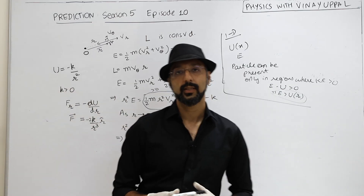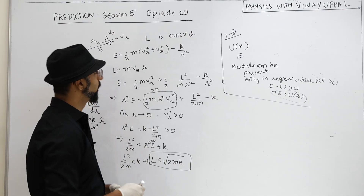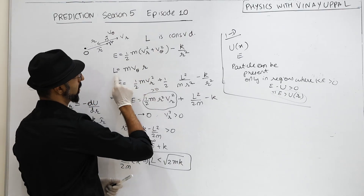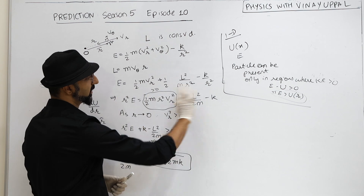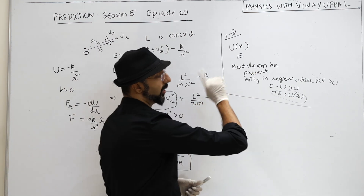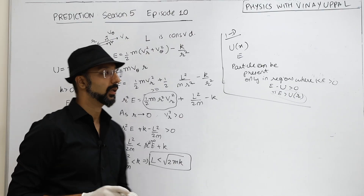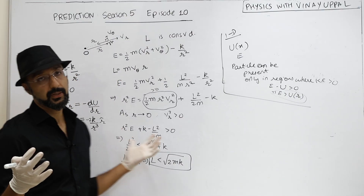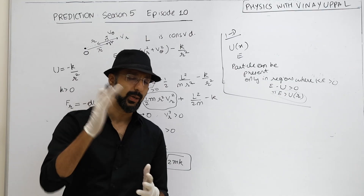So this is how we solve this kind of question — a central force problem. The key was to convert vθ in terms of L, and then apply the basic physics concept that kinetic energy must remain non-negative. This type of question can also be encountered in the work, power, and energy chapter. I hope you enjoyed the episode — let me know in the comments how your preparation is going. See you next time!